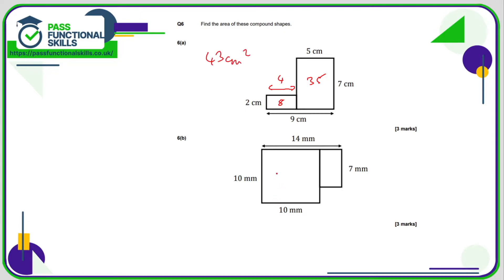In B, we've got 10 by 10, which is 100. And here we've got 7 by, well, it's 14 across the top and 10 from here to here. So this must be 4. Seven fours are 28. Add these two together, we get 128 millimeters squared.